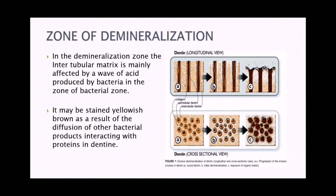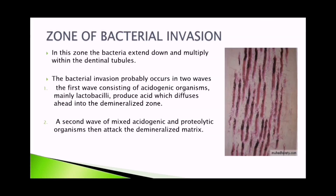In the zone of bacterial invasion, bacteria extend down and multiply within the dentinal tubules, some of which may become occluded by bacteria. There are always many empty tubules lying among the tubules containing bacteria. Bacterial invasion probably occurs in two waves. The first wave consists of acidogenic organisms, mainly lactobacilli, which produce acid that diffuses ahead into the demineralized zone.